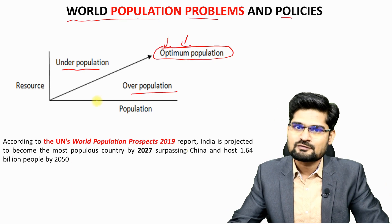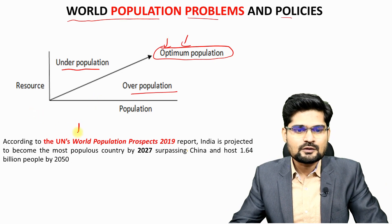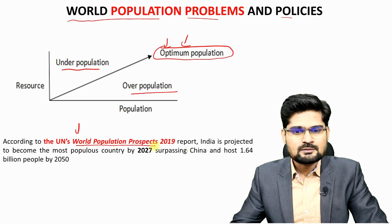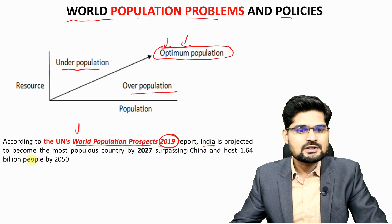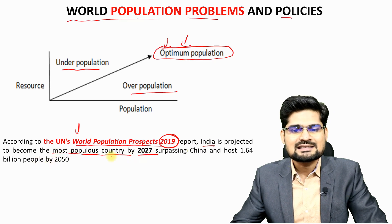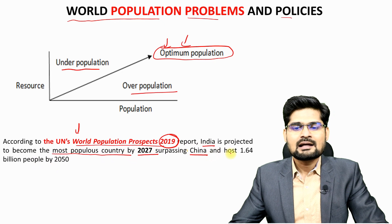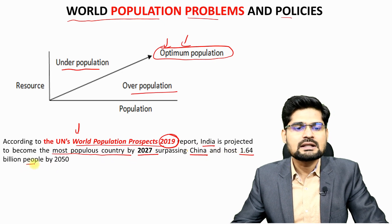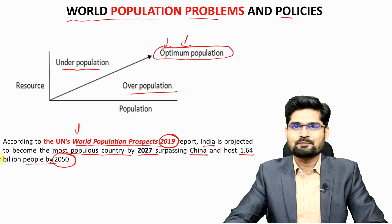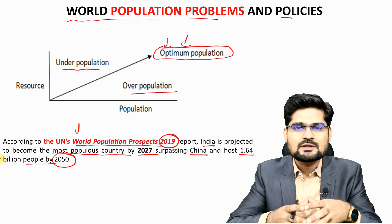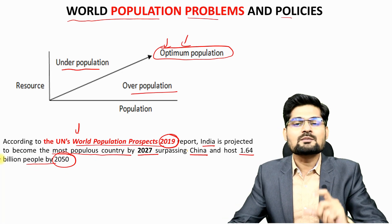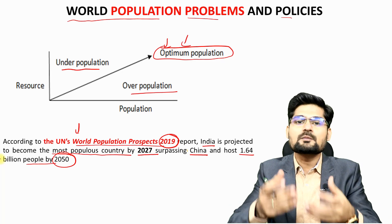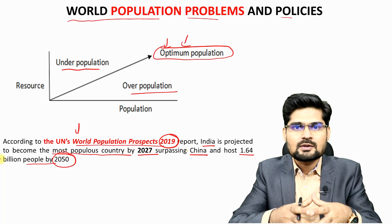For example, the UN's World Population Prospects 2019 report projects that India will become the world's most populous country by 2027, surpassing China, and will host 1.64 billion people by 2050. This is one key example of world population projections, and with it come the problems associated with overpopulation.